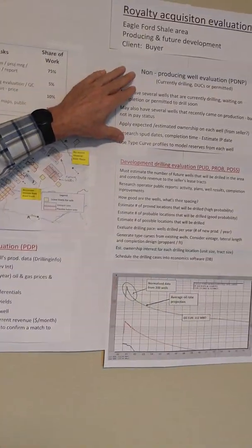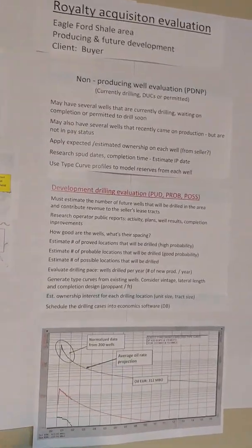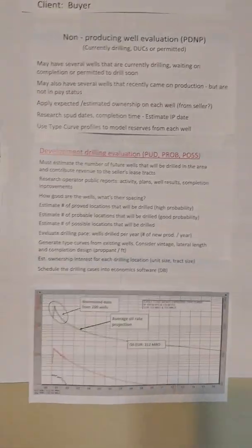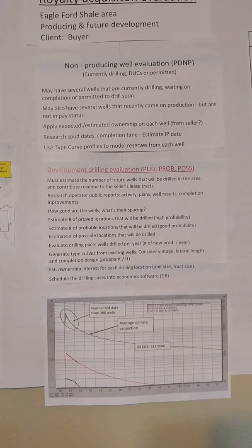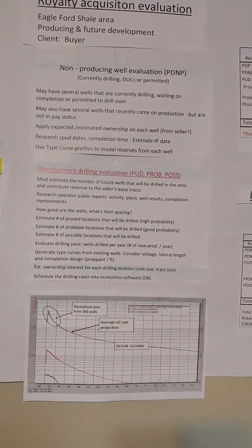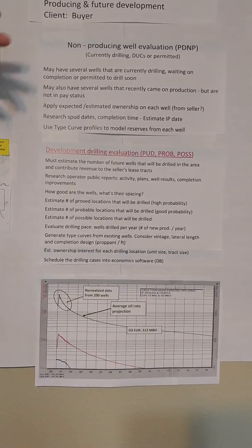The second thing we have to do is the non-producing well evaluation. There'll be a lot of wells that are currently drilling or not completed yet, or they're permitted and going to start drilling quickly. Also, there may be new wells with production recently, but they're not in pay status yet—the royalty owner is not getting these checks yet. We have to estimate all that and put that in the cash flow and reserve estimates.